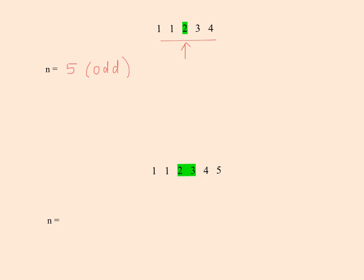Another way of finding the middle number is (n + 1) / 2. We add 1 because n is odd, making it even so it's divisible by 2. So that's (5 + 1) / 2 = 3. This gives us the position of the median — the third number. The first is 1, the second is 1, the third is 2. So 2 is the median.